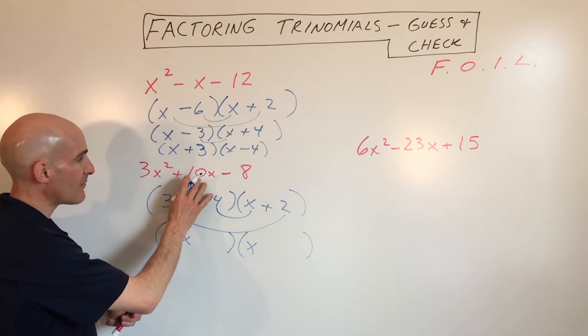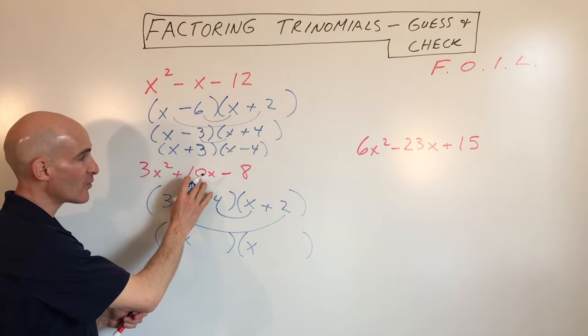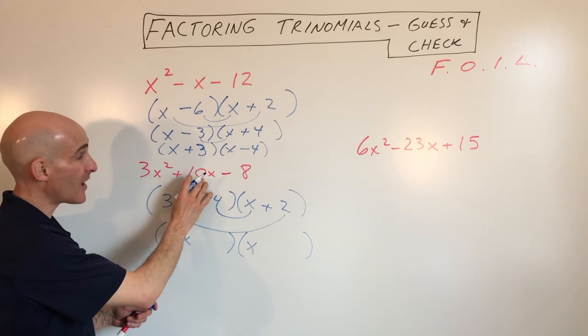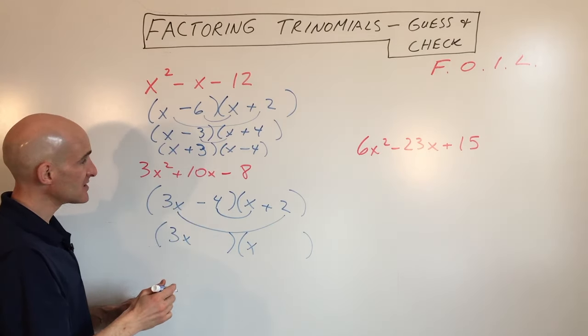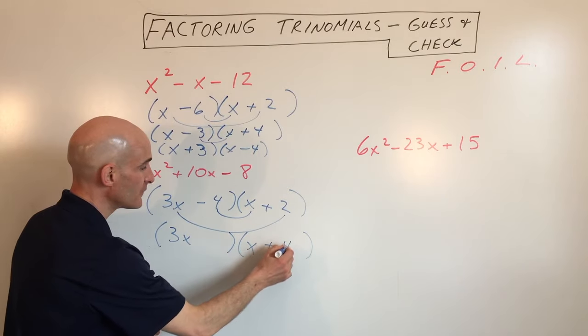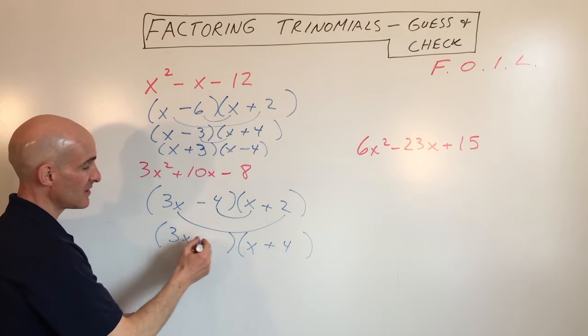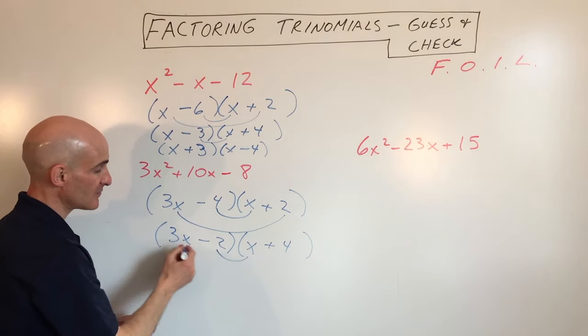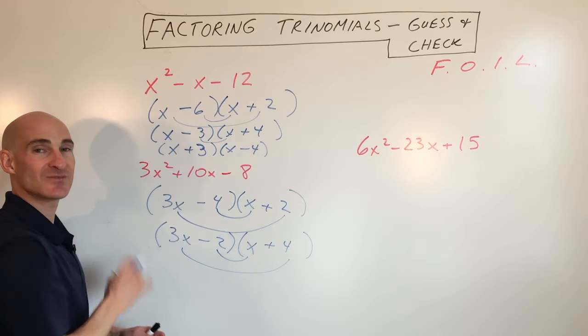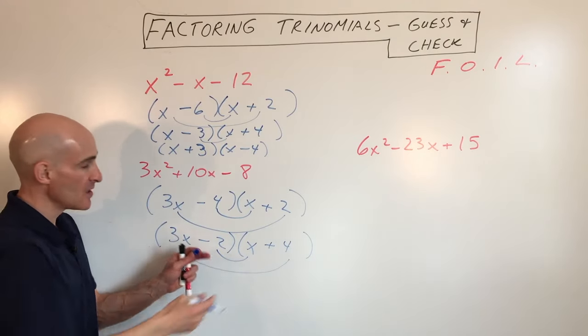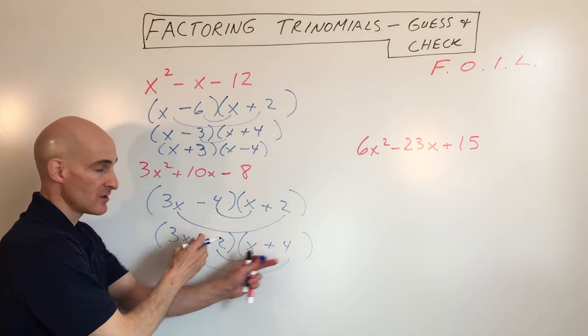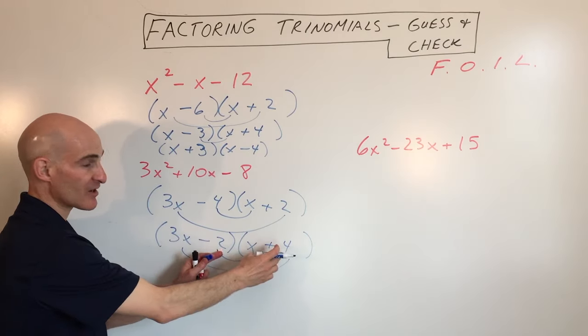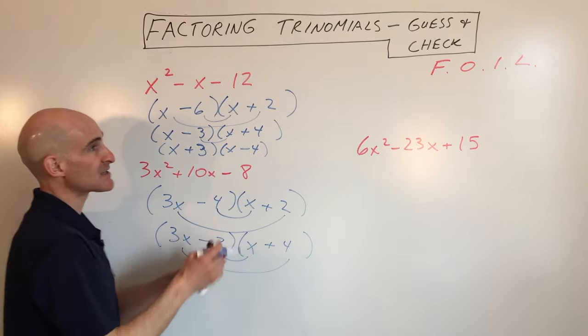So it looks like here, we want to get a positive 10x. So it means that when we have a positive number and a negative number, we want the larger one to be positive. So let's see, maybe if we go like this, positive 4, that gives you 12x. Negative 2, that gives you negative 2x. That adds up to 10x. So we factored it. So again, you can change the order. You could change the signs. You could try a different combination, but that's how I...